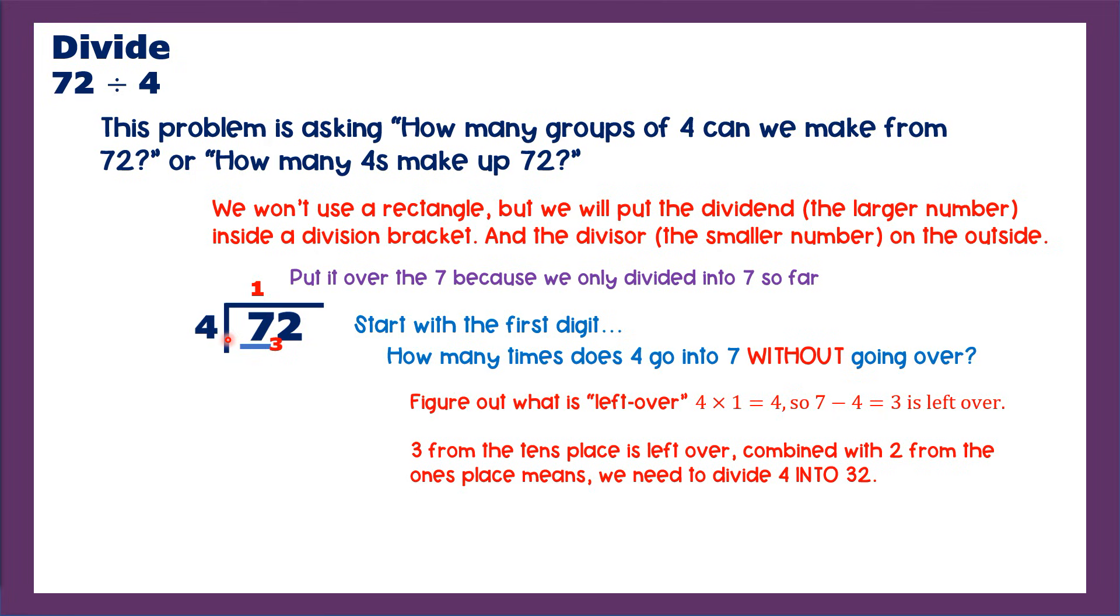You just need to say 4 goes into the 7 once, 3 left over. 3 with 2, 3 in the 10s place, makes 32. How many times does 4 go into 32? 32 divided by 4 is 8. We're supposed to know that. We have to know our facts up to 12s. So we have to know those for division. And so we just put the 8 up there and we get 72 divided by 4 is equal to 18.